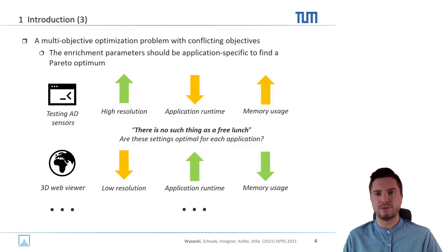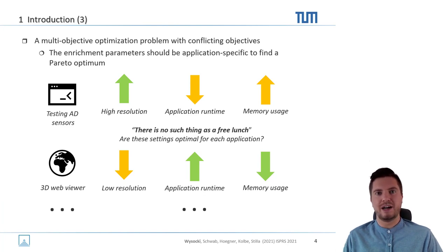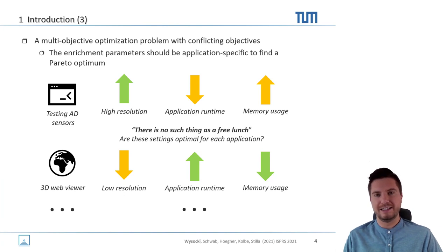This is basically a multi-objective optimization problem with conflicting objectives, because when some parameters are suitable for testing automated driving sensors, the same set of parameters may not be optimal for a 3D web viewer. So there is no such thing as a free lunch, as they say.